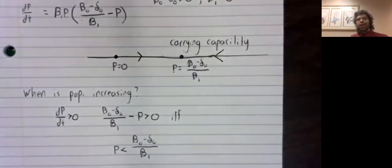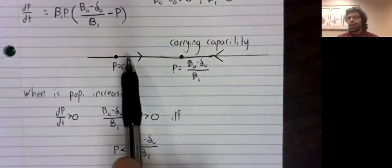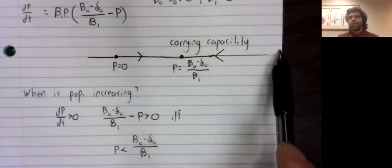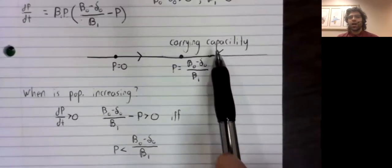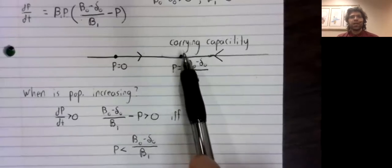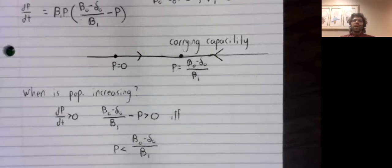So without separating variables and without solving a differential equation, we have figured out what will happen to this animal population over time. It will either increase if it's initially small, or it will decrease if it's initially large, until it reaches its carrying capacity. And then it will remain at its carrying capacity as time goes forward.